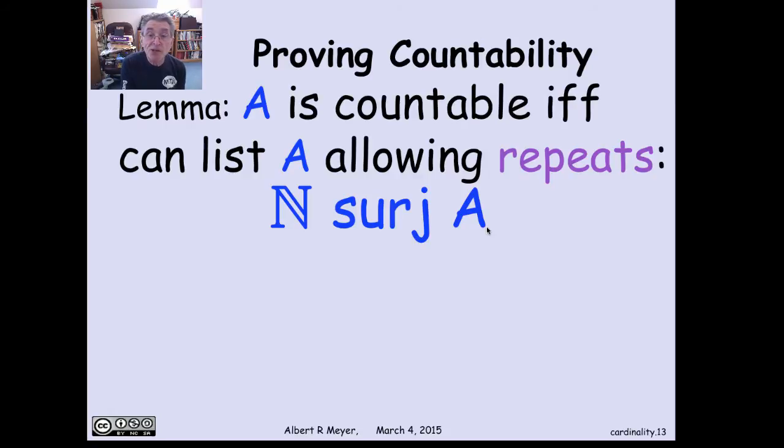I'm supposed to have a bijection if it matches the other definition. How do you do that? If you're a computer scientist, you know how to change a sequence with repeats into a sequence without repeats. You just filter it for duplicates going from left to right. Take this infinite sequence of elements of A in which there are repeats and keep only the first occurrence of each element.